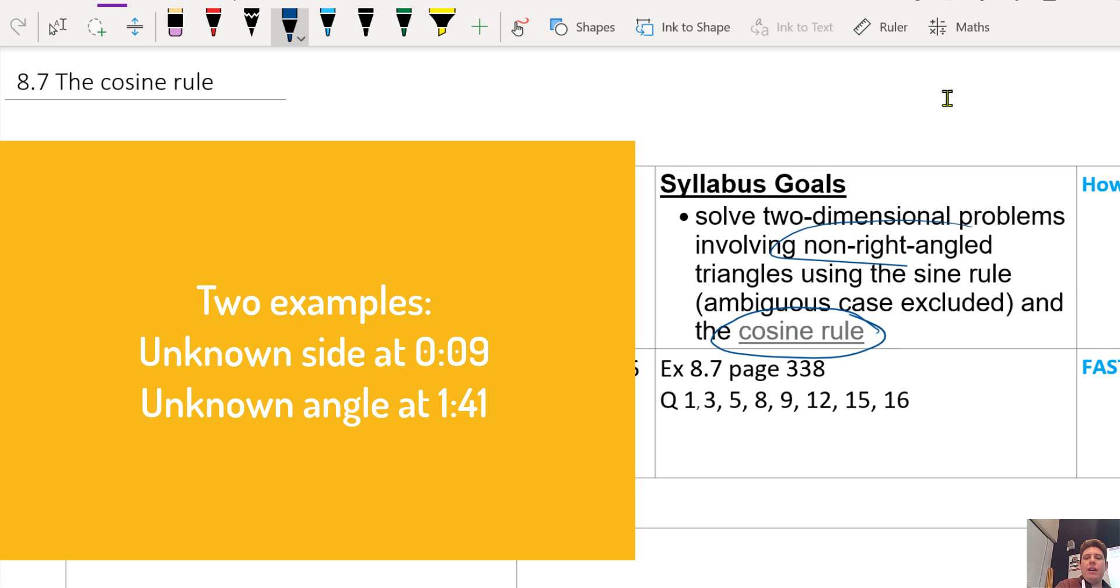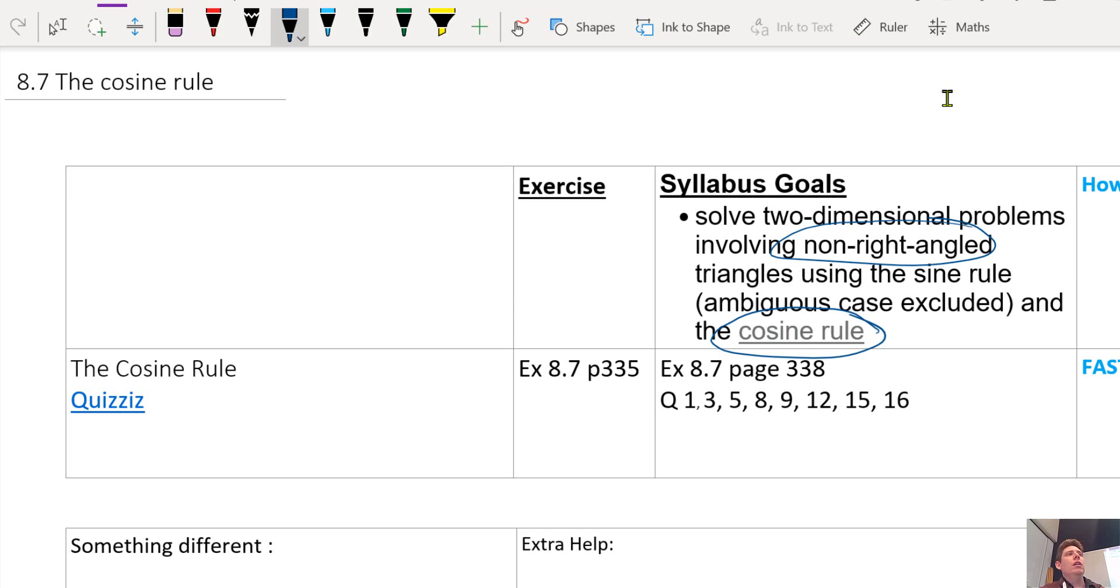Non-right angle, write it down: non-right angle triangles using the cosine rule.